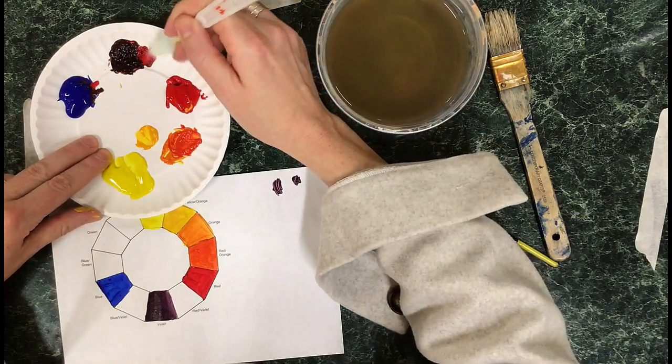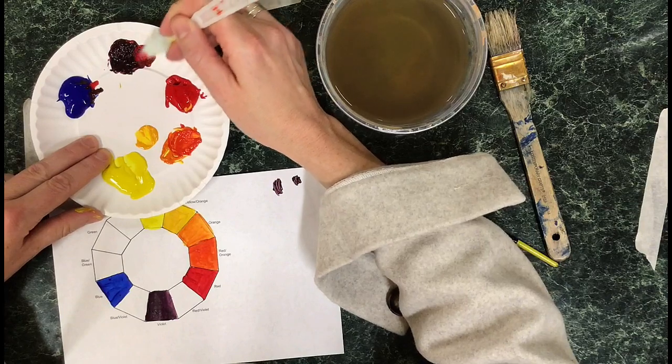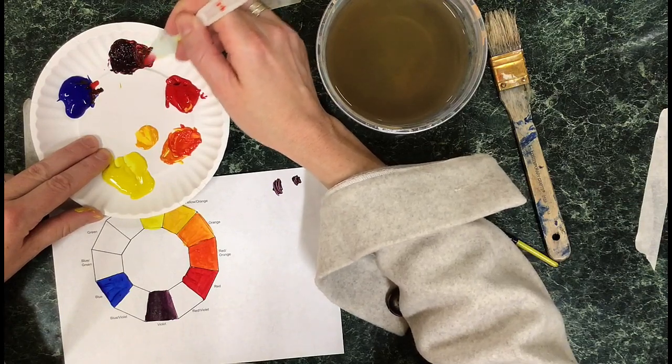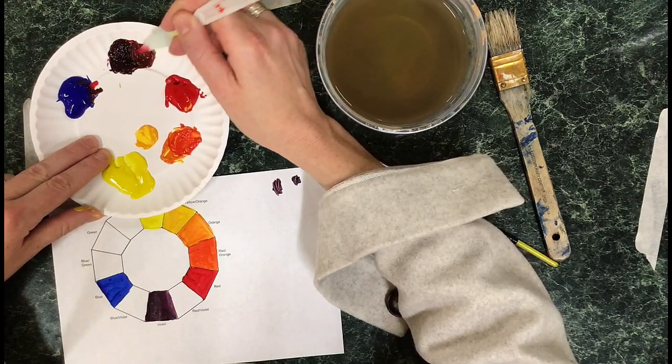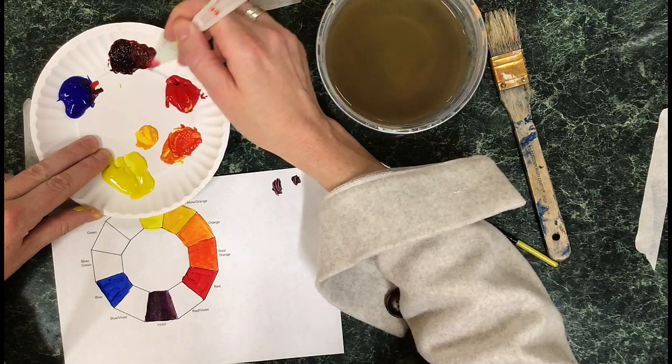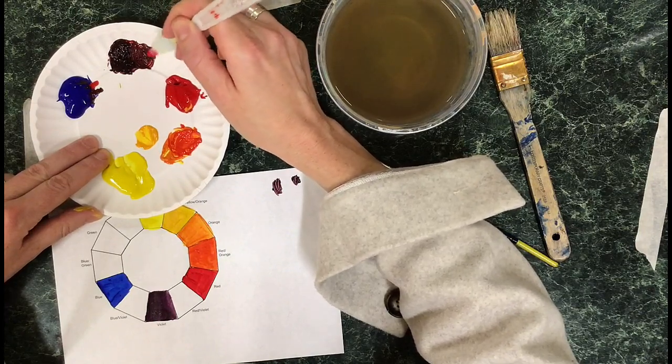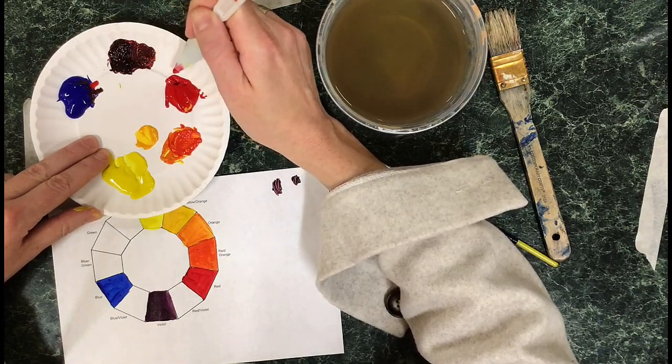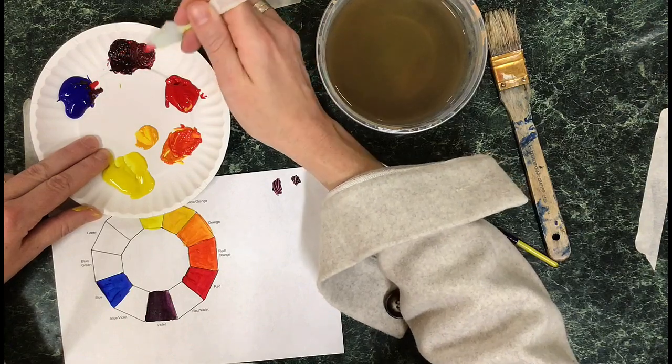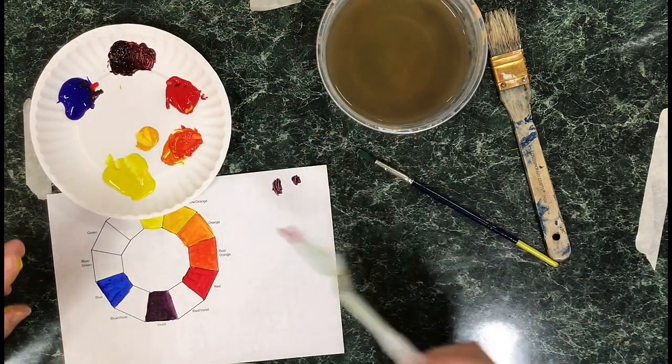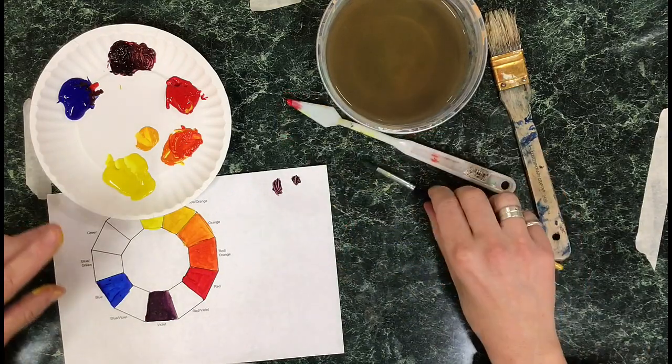You can see I'm just adding a tiny bit of red into my violet to make a red-violet. These combination colors of a primary and a secondary are called tertiary colors. That's the fancy name—if you want to just call them combination colors, that's fine too.